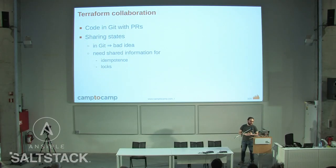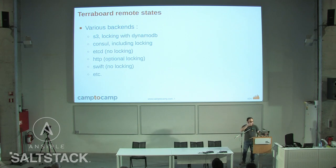When you want to do collaboration in Terraform, the first thing you do is share your code in Git using PRs and so on. But then it comes to a point when you need to share state, because Terraform stores state. Using Git to store state is a bad idea. So Terraform provides remote states using different backends: S3, Consul, HTTP, and so on — the list goes on because you can expand it. Those remote states allow team members to share information and get the state back, and they're pushed by Terraform after the plan is applied.